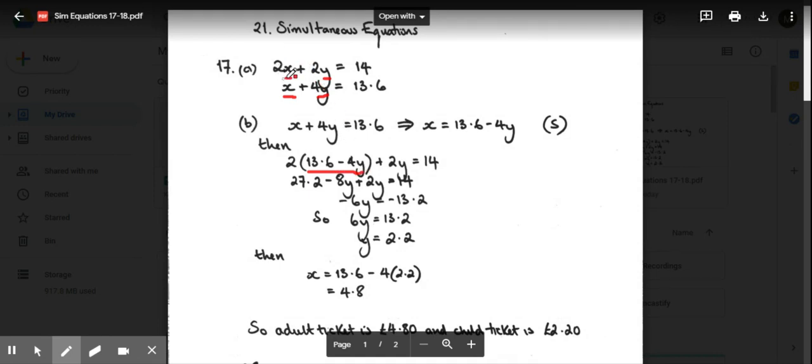I'm using this 2x + 2y = 14. Instead of x, I'm going to substitute that in from there. Times out the brackets, that's this line. Simplify, I've just made everything positive, and here I've divided by 6 so I get a value for y of 2.2.